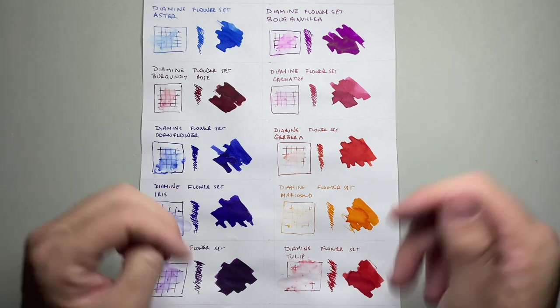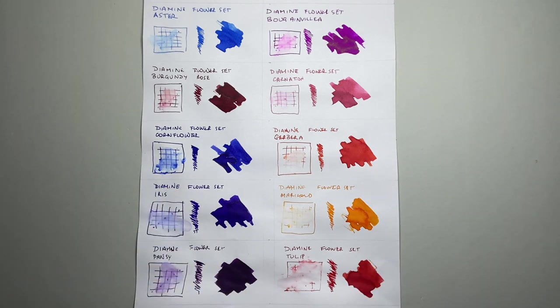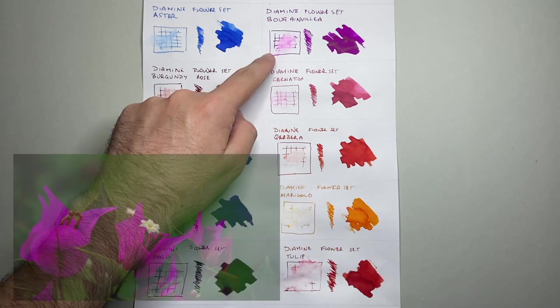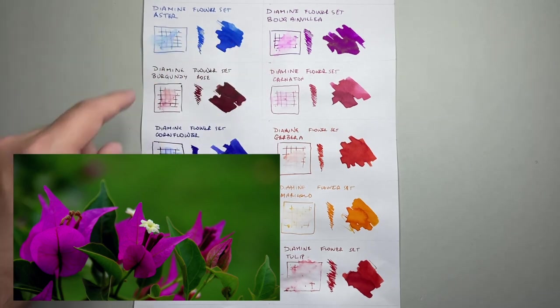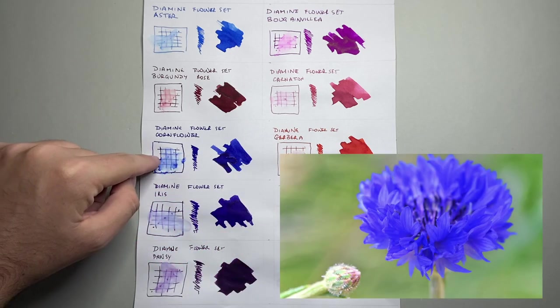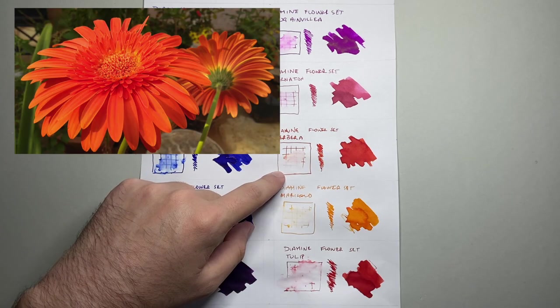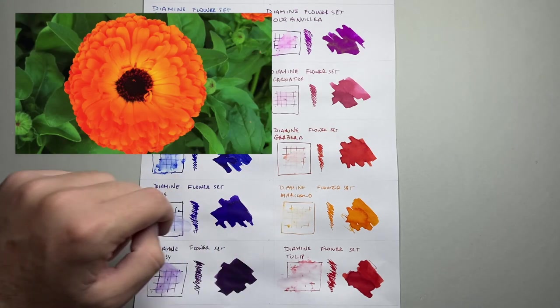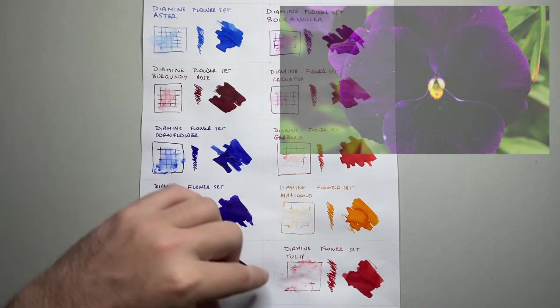But today we're looking at the Flower set, which is a set made by Diamine and put into little samples here by Pulp Addiction. So I'll just quickly run through them once again. And I'll show here, I'll also just quickly show like what the flower looks like, so you can see how the Diamine have captured the color. So we've got Aster, Bougainvillea, Burgundy Rose, Carnation, Cornflower, Gerbera, Iris, Marigold, Pansy, and Tulip.